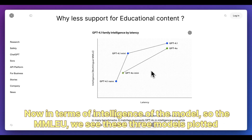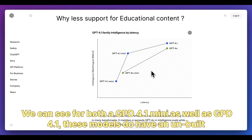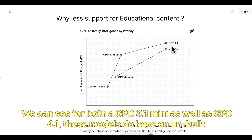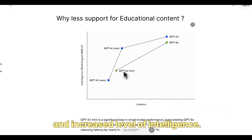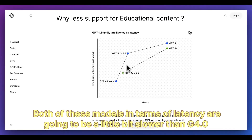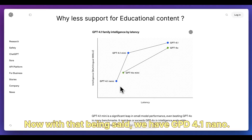In terms of intelligence, on the MMLU, we see these three models plotted against GPT-4.0 Mini and GPT-4.0. Both GPT-4.1 Mini and GPT-4.1 have an increased level of intelligence. However, both of these models in terms of latency are going to be a little bit slower than GPT-4.0 Mini and GPT-4.0.